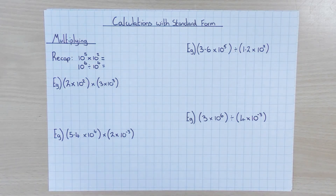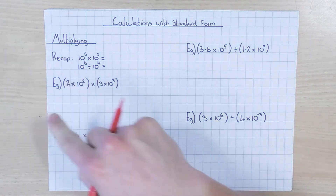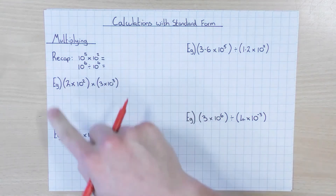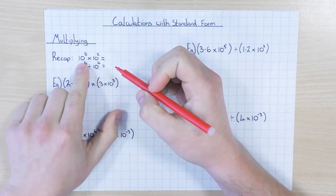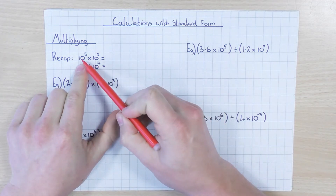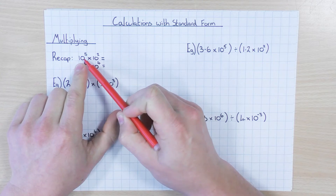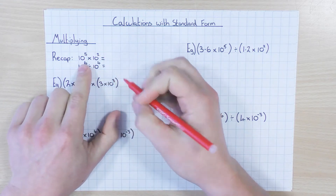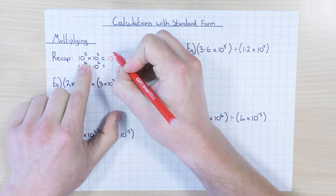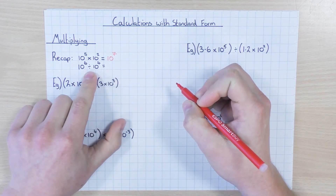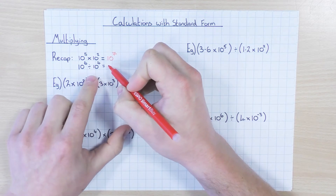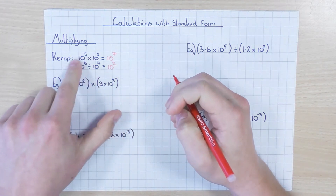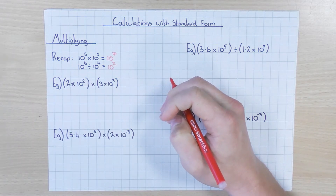In this video we're going to look at doing some calculations with numbers in standard form — multiplying and dividing. But before we crack on, just a little recap of some of our indices rules. If you have the same base numbers and you're multiplying, you add the powers — so 10³ × 10⁴ = 10⁷. And if you have the same base but you're dividing, you subtract the powers — so 10⁶ ÷ 10⁴ = 10². We're going to rely on these rules when doing standard form.